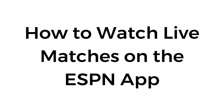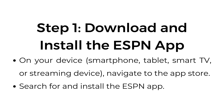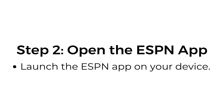How to watch live matches on the ESPN app. Step number one: download and install the ESPN app. On your device, navigate to the App Store. Search for and install the ESPN app.